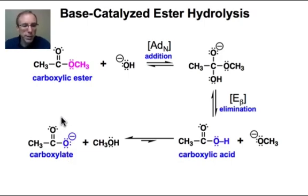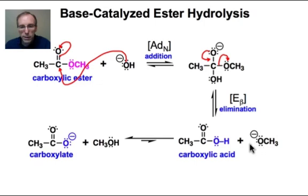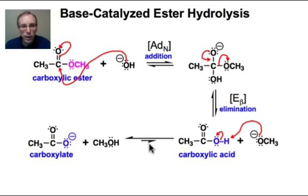We can understand what drives this reaction to the hydrolysis product — the carboxylate anion — by looking at the mechanism. The mechanism is this two-step addition-elimination through a tetrahedral intermediate. We begin with the ADn step to the polarized π bond of the carbonyl, creating the tetrahedral intermediate, which undergoes beta elimination, kicking out the methoxide anion to generate the carboxylic acid. The methoxide is a very strong base and the carboxylic acid is a strong acid, so the favorable direction for this equilibrium is deprotonation to generate the carboxylate, which drives the reaction forward.